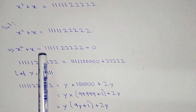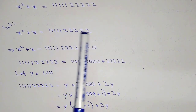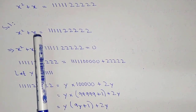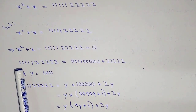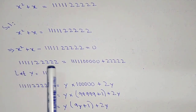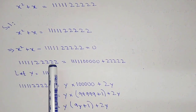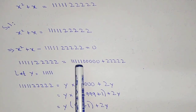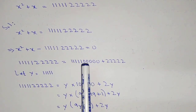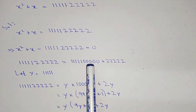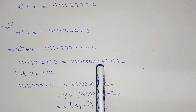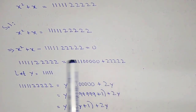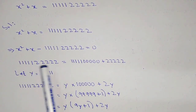Here we have x squared plus x minus this number, and the sign will change. We can write this number as 1111100000 plus 5 times 2, so we are breaking this number down.